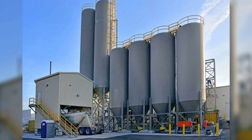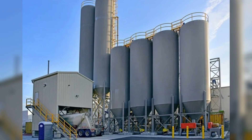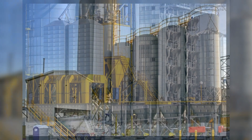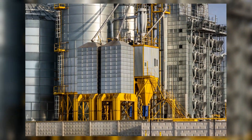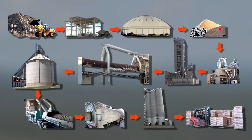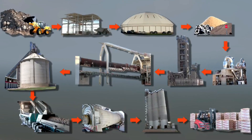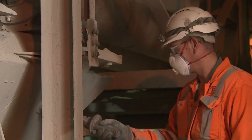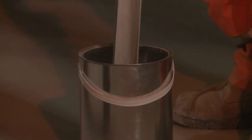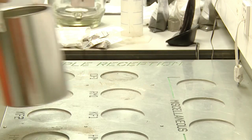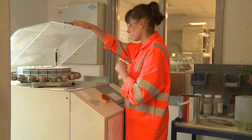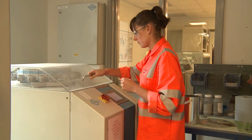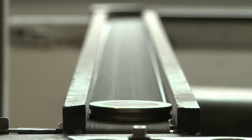At this stage, the cement is ready. It's pumped pneumatically to storage silos, each with a capacity of 7,500 tons. During each step of the cement manufacturing process, cement plant laboratories carry out quality control checks through frequent chemical and physical tests. They also analyze and test the finished cement to ensure it complies with all industry specifications.